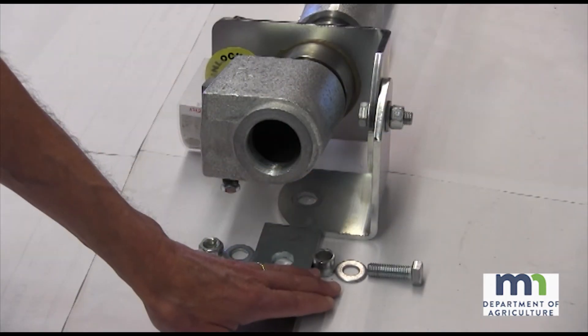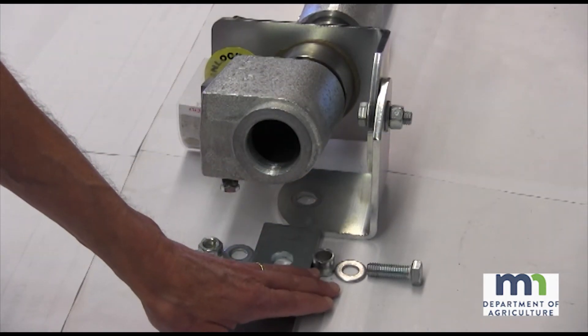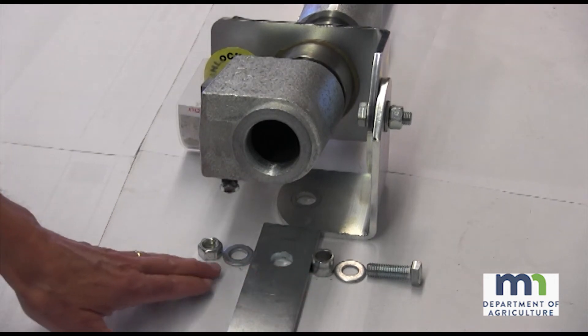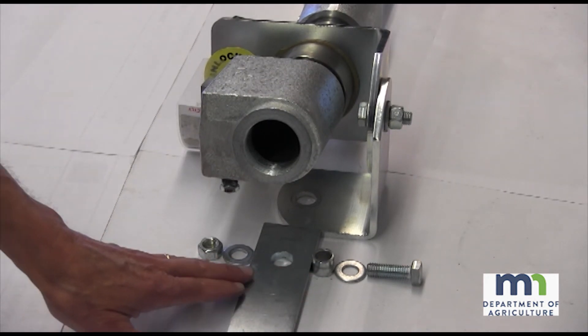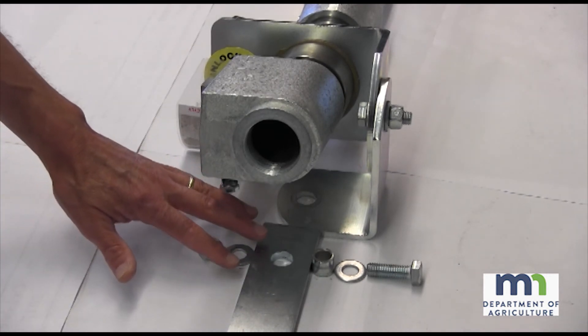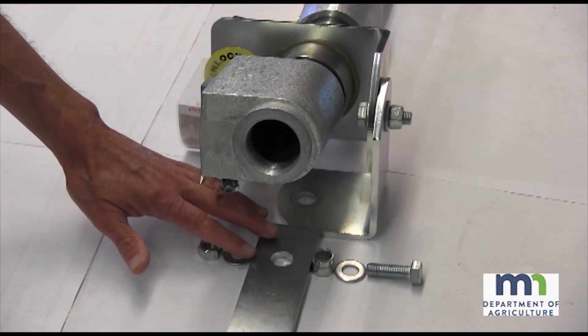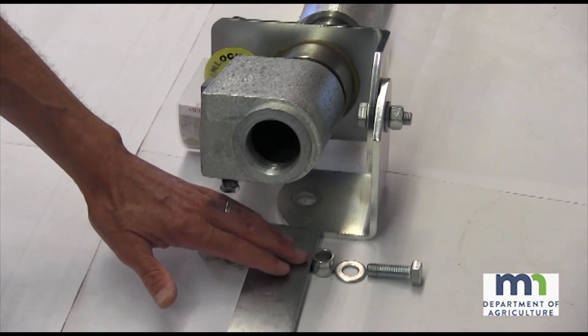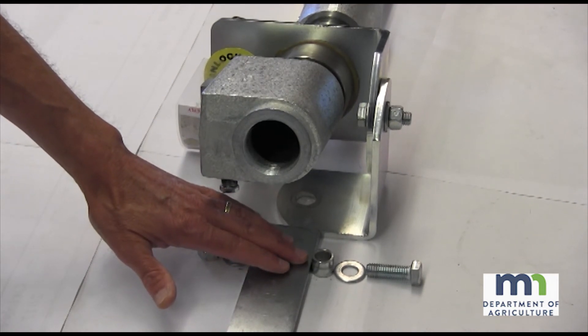A bolt, bushing, washer, and lock nut are used to connect the multi-directional swivel assembly to the flat mounting bar. The bushing in the bolted connection allows the multi-directional swivel assembly to move freely side to side.